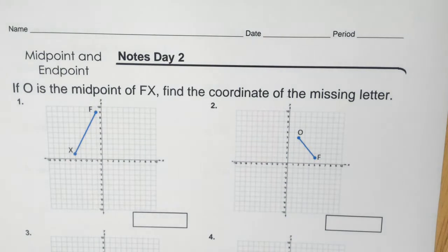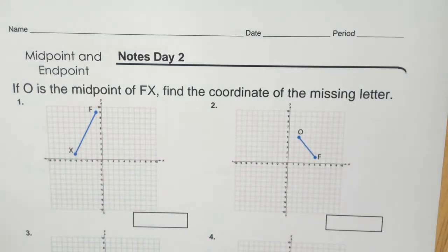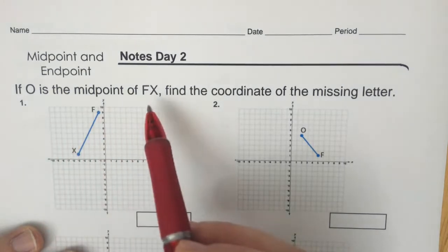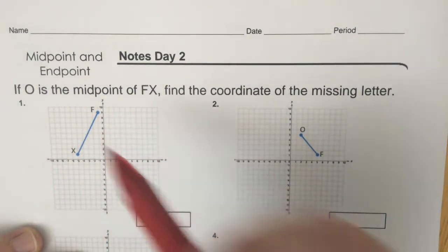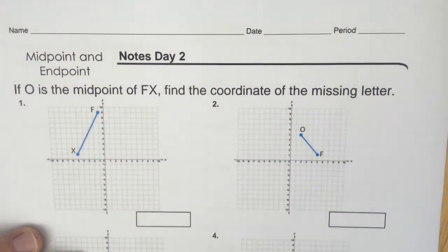Let's just recap this. So midpoint and endpoint — depending on what you're looking for, you're going to be doing one of two different patterns. If you are looking for the midpoint, you're just looking for the middle of those two letters. But if you're looking for the endpoint, you just continue the pattern until you find it.